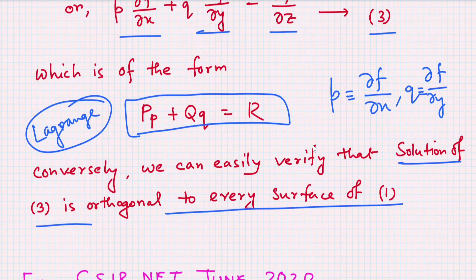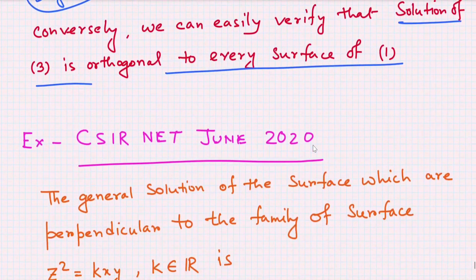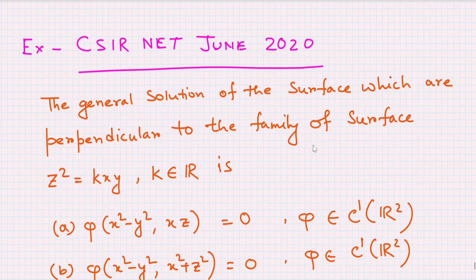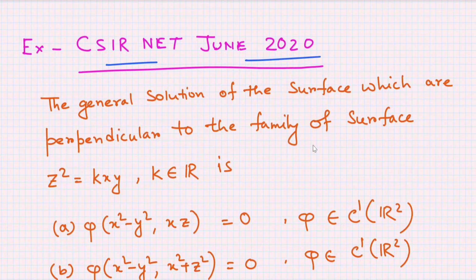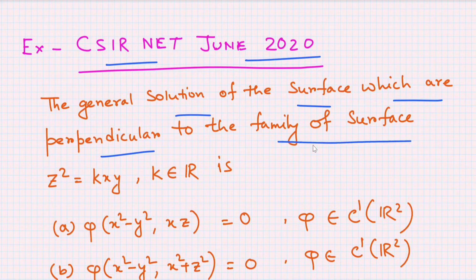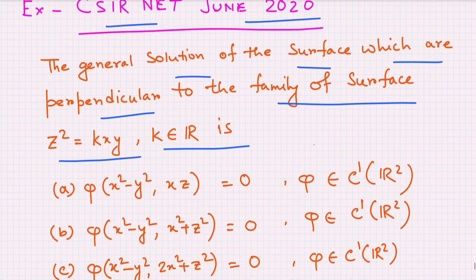Conversely, we can easily verify that the solution of equation (3) is orthogonal to every surface of the first system. Now let us take an example to briefly describe this topic — a question from CSIR NET June 2020. The question asks for the general solution of the surfaces which are perpendicular to the family of surfaces z² = kxy, where k belongs to ℝ.